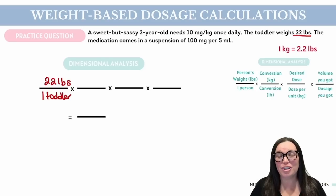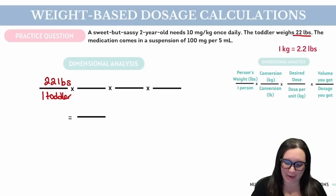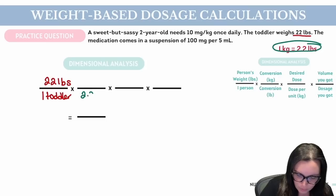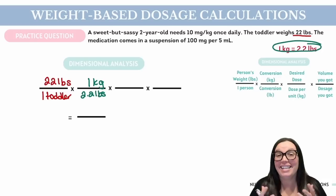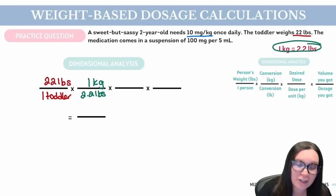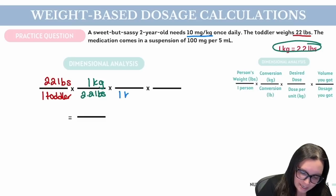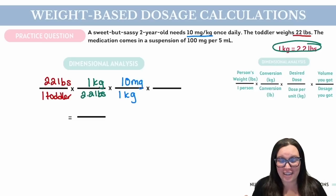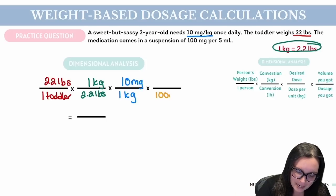Next up, we want to do some conversions because we know the medication is available per kilogram. We know that one kilogram is equal to 2.2 pounds, so I'm going to put 2.2 pounds on the bottom and one kilogram on the top. Next, we need to figure out what we want to give. We know we want to give 10 milligrams per kilogram, so I'm going to put my one kilogram on the bottom and 10 milligrams on the top. Lastly, what is it available in? We have 100 milligrams per 5 mLs, so 100 milligrams goes on the bottom and 5 mLs on the top.